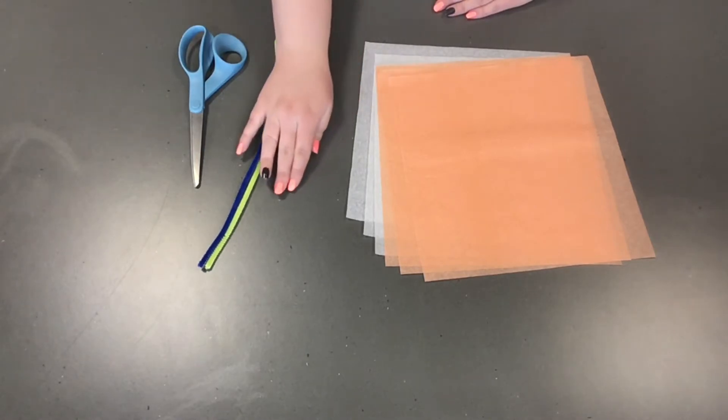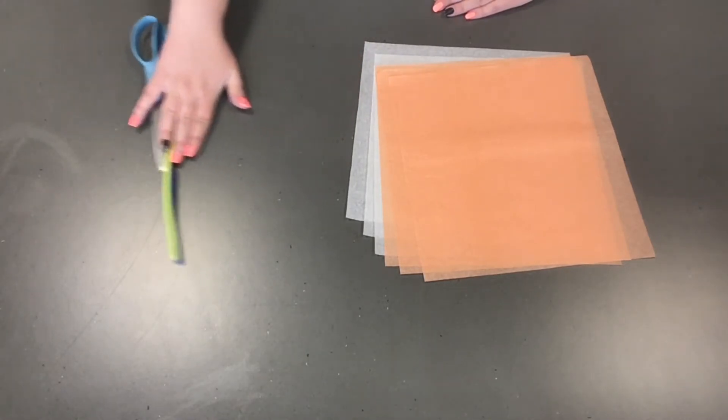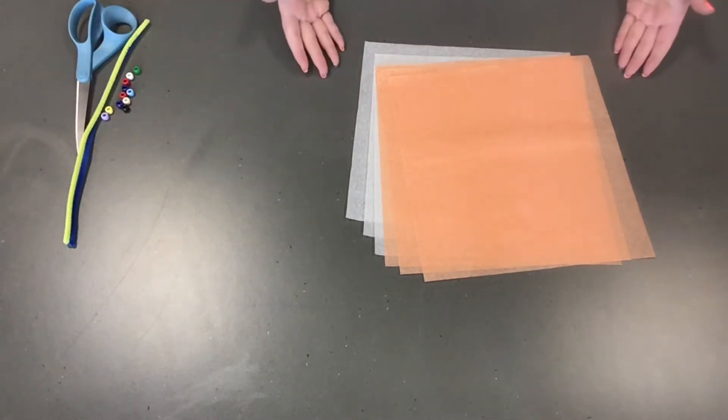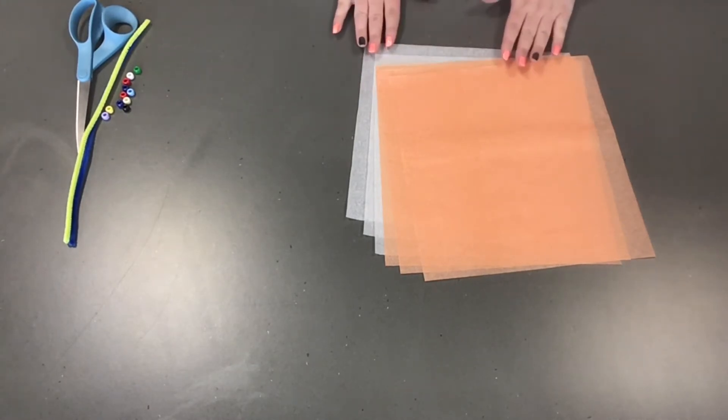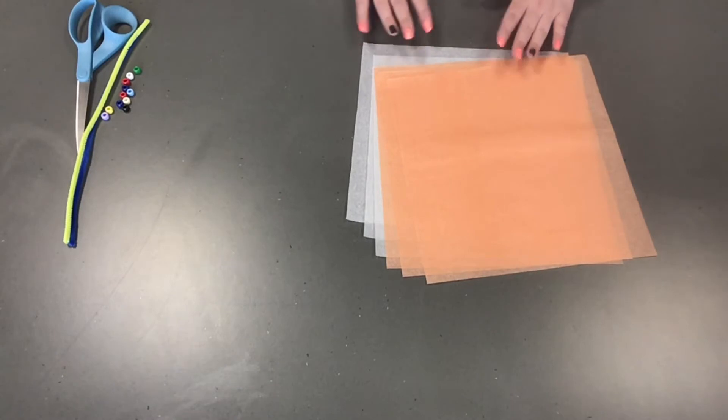So for now let's just set all of this aside and we're going to take our tissue paper. Now I'm using six sheets right now but you definitely don't have to use this many. If you'd like to use three or four sheets you'll still have a pretty flower. It just won't be as full as the one you saw before.